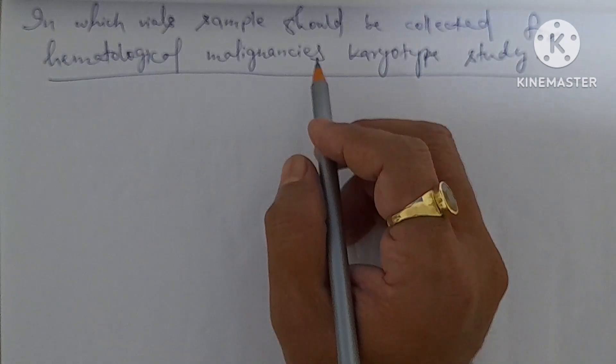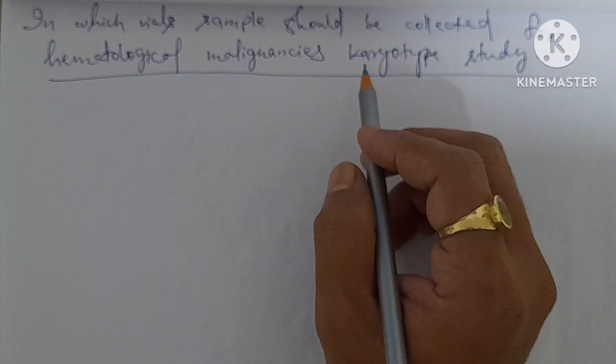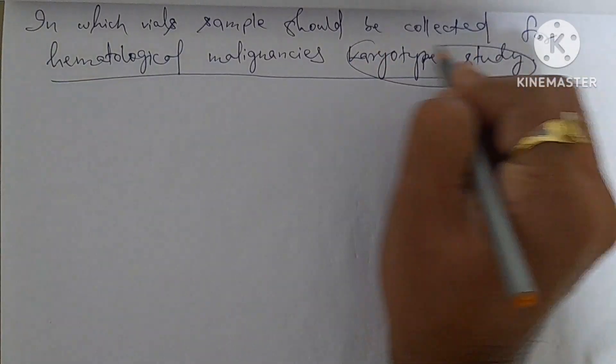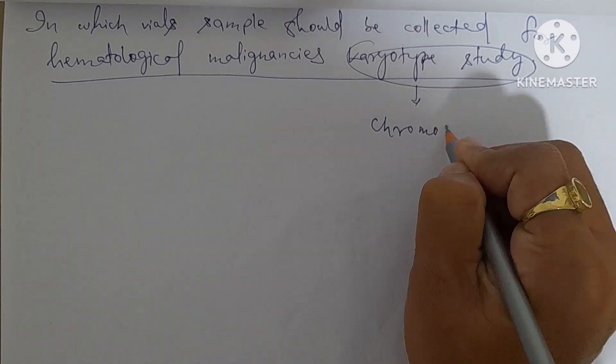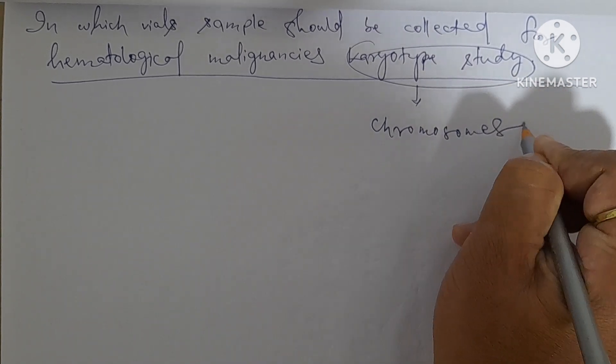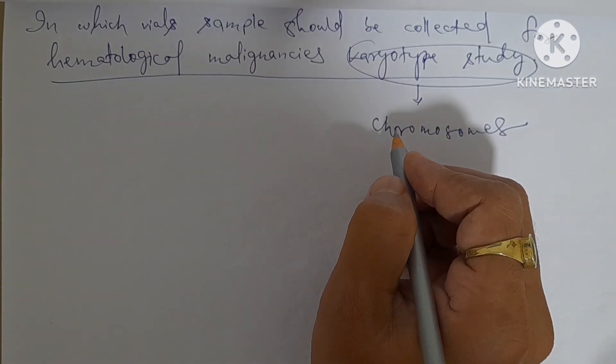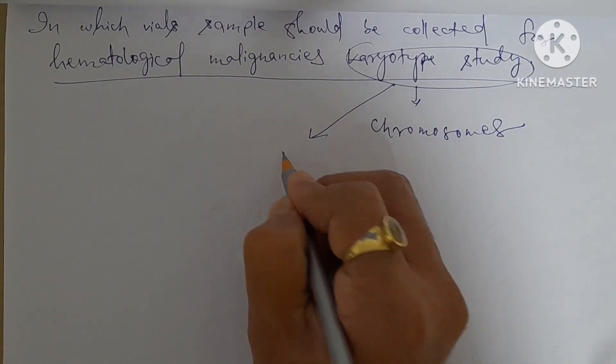Samples should be collected for hematological malignancy karyotype study. Karyotype study is the study of chromosomes, and for this karyotype study, we need live cells.